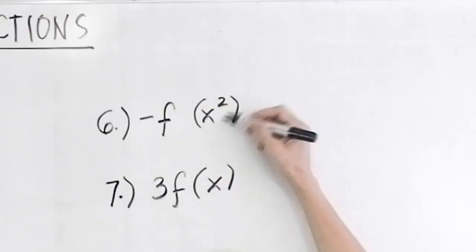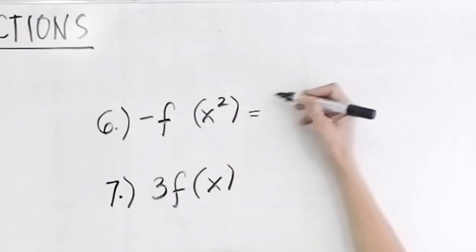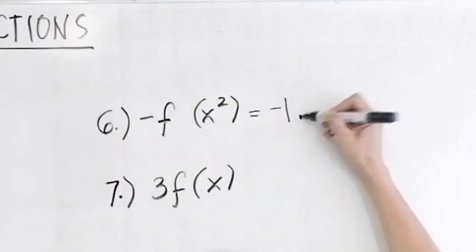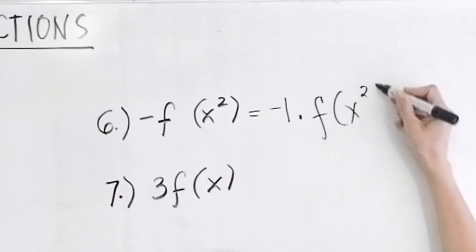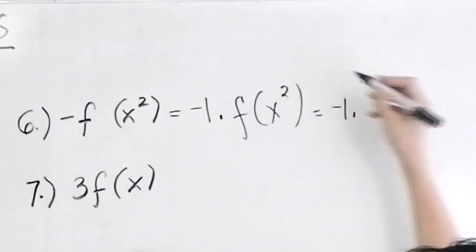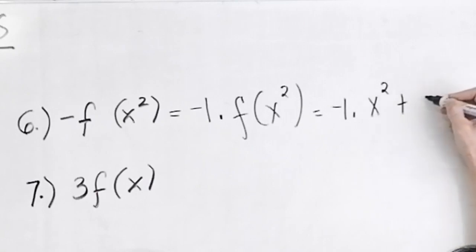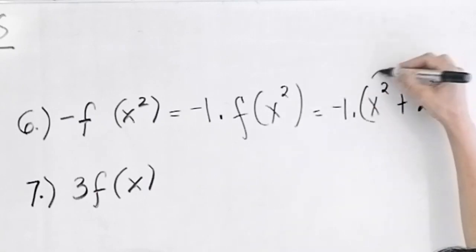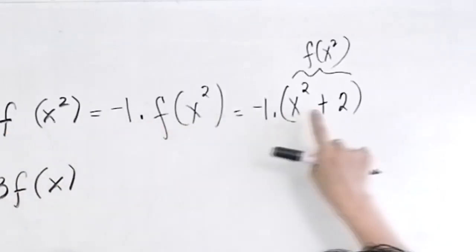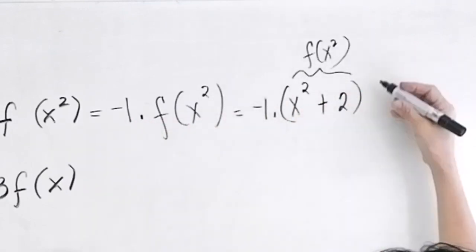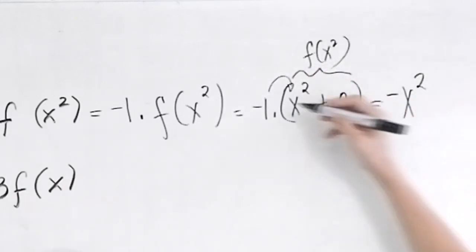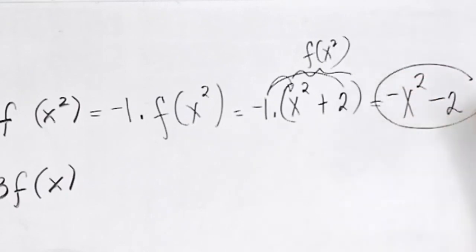What is -f(x²)? The negative sign means negative 1 times f(x²). So it's negative 1 times (x² + 2). Put the parenthesis because the whole thing is f(x²) — substitute x² for x, then copy the 2. Distribute: negative 1 times x² is -x², and negative 1 times 2 is -2. Final answer: -x² - 2.